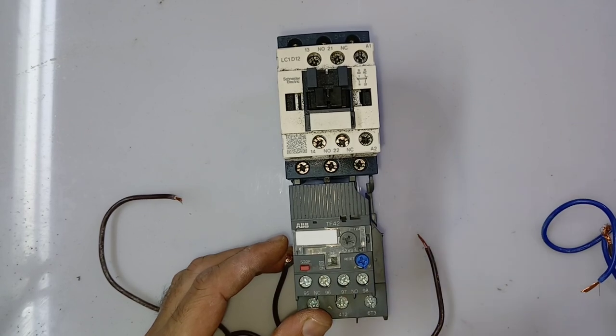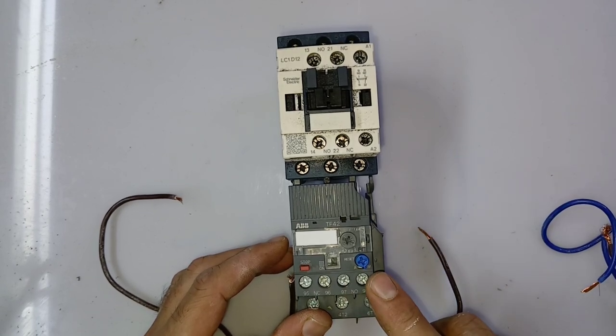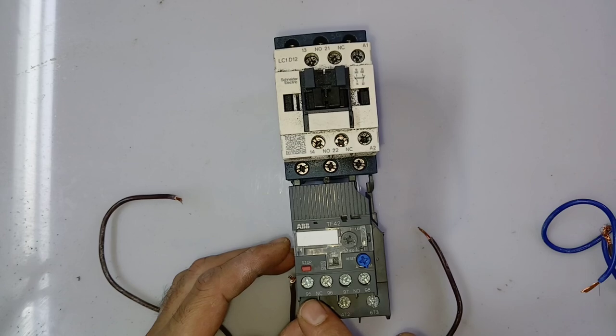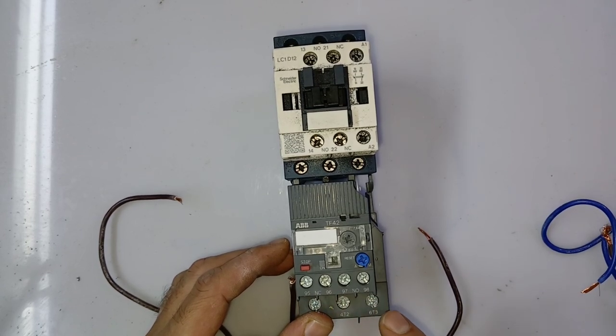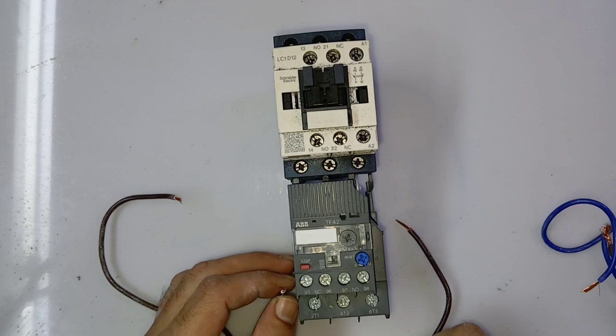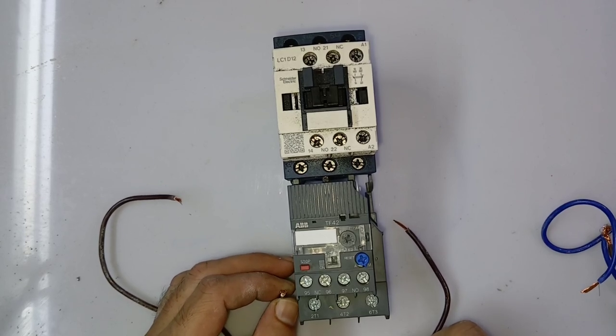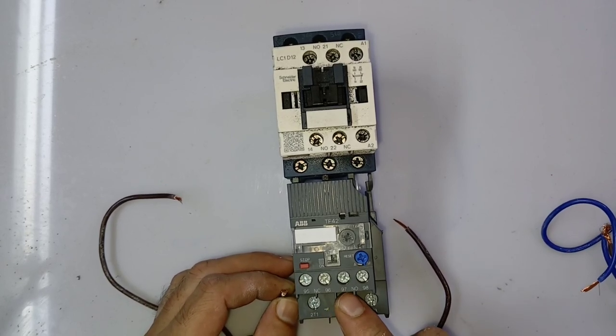And this is the push button - you can stop the system by this red switch. So this is how you can use the overload relay. Now you can see this is point 95, 96, 97, 98. I will show you how to connect cables with all these points.